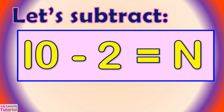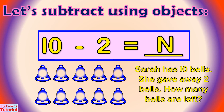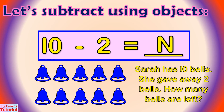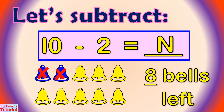Step 5 — Solve the number sentence: 10 minus 2 equals n. Let's subtract using objects. We'll have 10 bells, then subtract 2 by crossing out two bells — one, two. Then we count how many bells are left: one, two, three, four, five, six, seven, eight. There were eight bells.